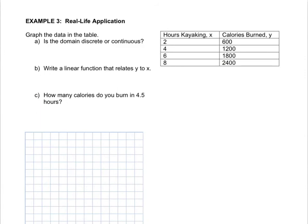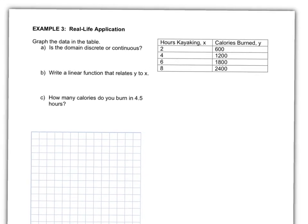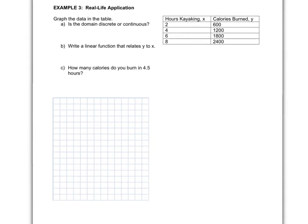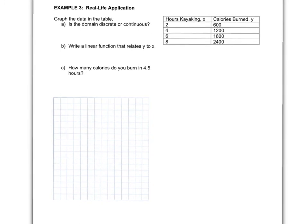Final example is a real-life application. Graph the data in the table. A, is the domain discrete or continuous? B, write a linear function that relates y to x. And letter C is how many calories do you burn in 4.5 hours? So I'm just going to zoom a little, so that way I can get the whole page on the screen. And you'll notice that there's no x or y axes. You need to decide how to set it up.